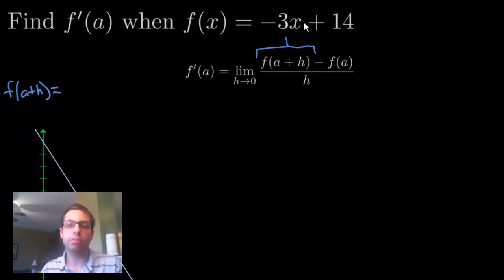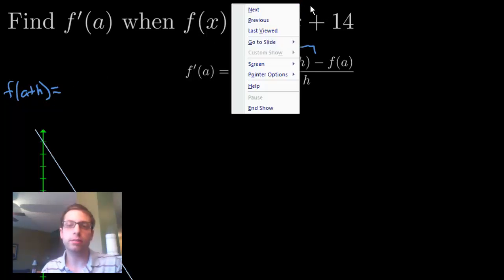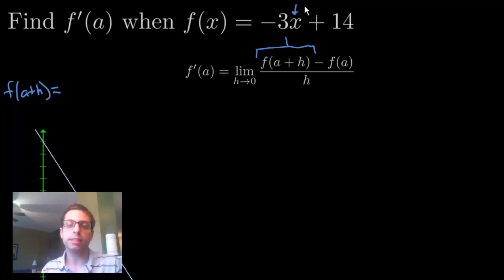Now, all you're doing is you're replacing this x right here. You're replacing that x with a + h. So, that's going to be -3(a + h) + 14. So, that's what's going to go right here.